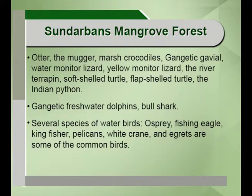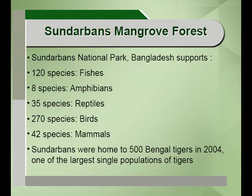Other fauna of the Sundarbans include otters, the magar or marsh crocodile, Gangetic gavial, water monitor lizards, flap-shelled turtles, Indian pythons, Gangetic freshwater dolphins, bull sharks, and water birds like the osprey, white crane, egrets, kingfisher, and pelicans. The Sundarbans National Park of Bangladesh alone supports 120 species of fishes, 8 species of amphibians, 35 species of reptiles, 270 species of birds and 42 species of mammals.